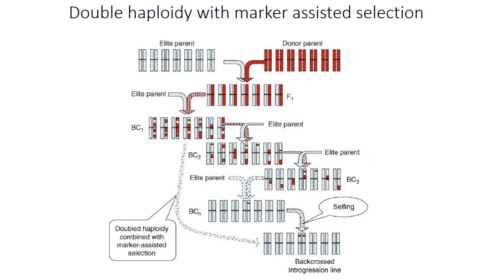Double haploid with marker-assisted selection: with the help of marker-assisted backcrossing, recurrent selection and related approaches, double haploid can be directly obtained to get introgression lines without wasting much time in continuous backcrossing in order to avoid linkage drag.